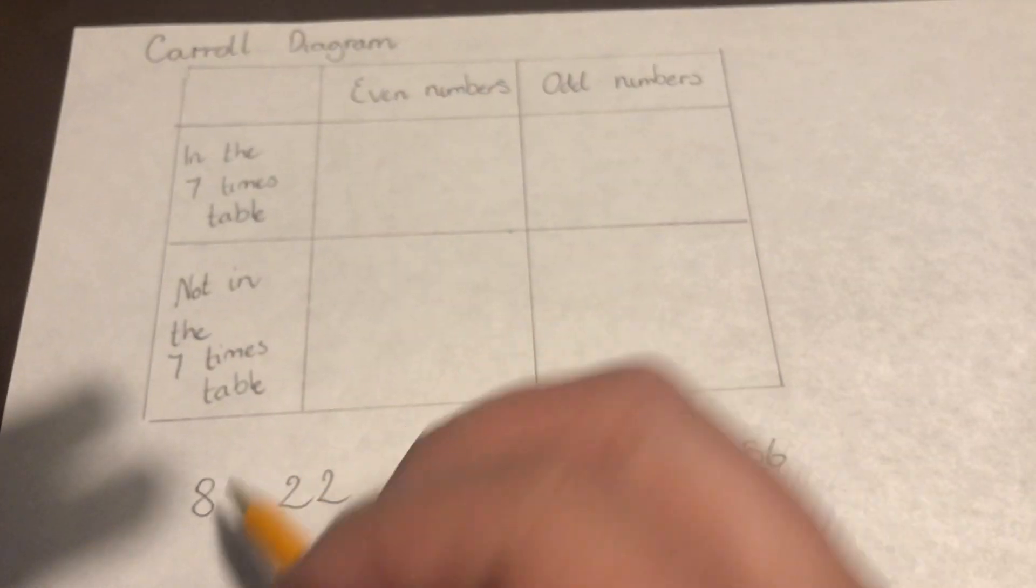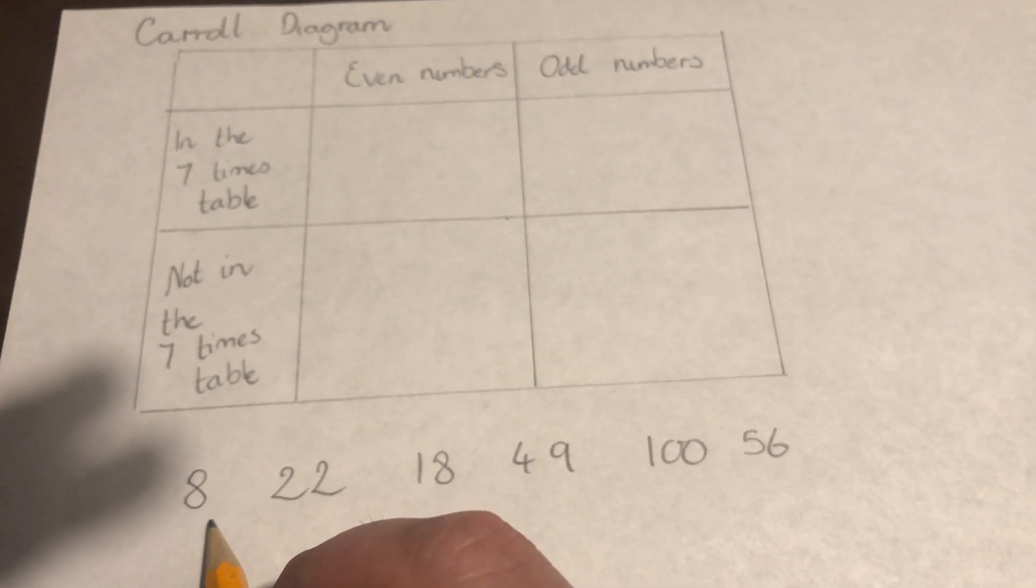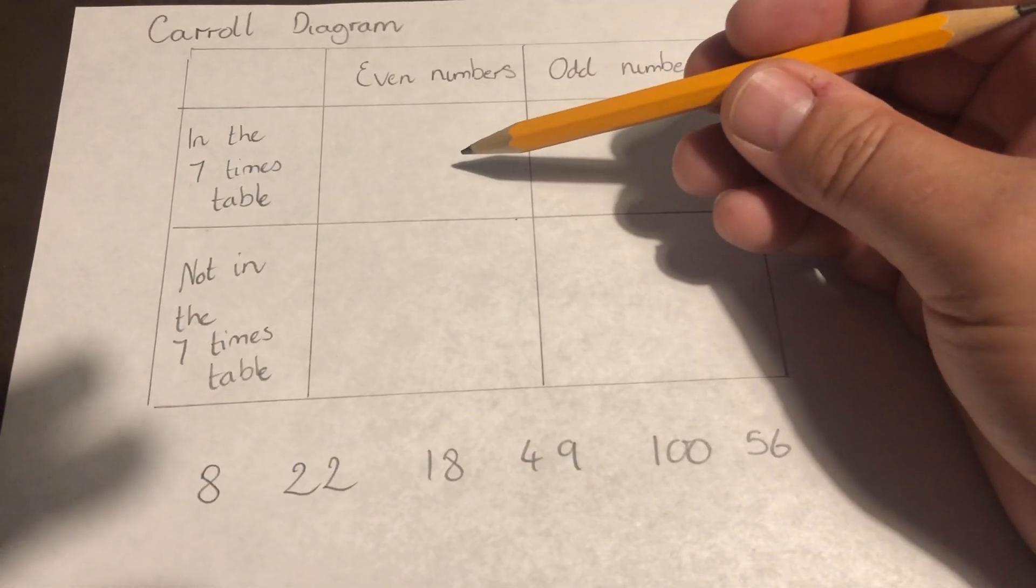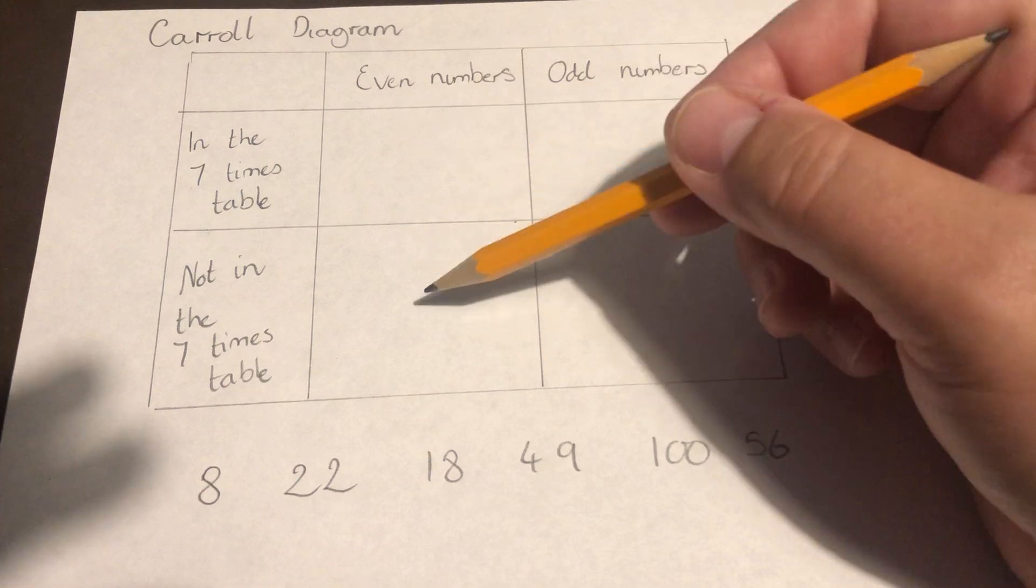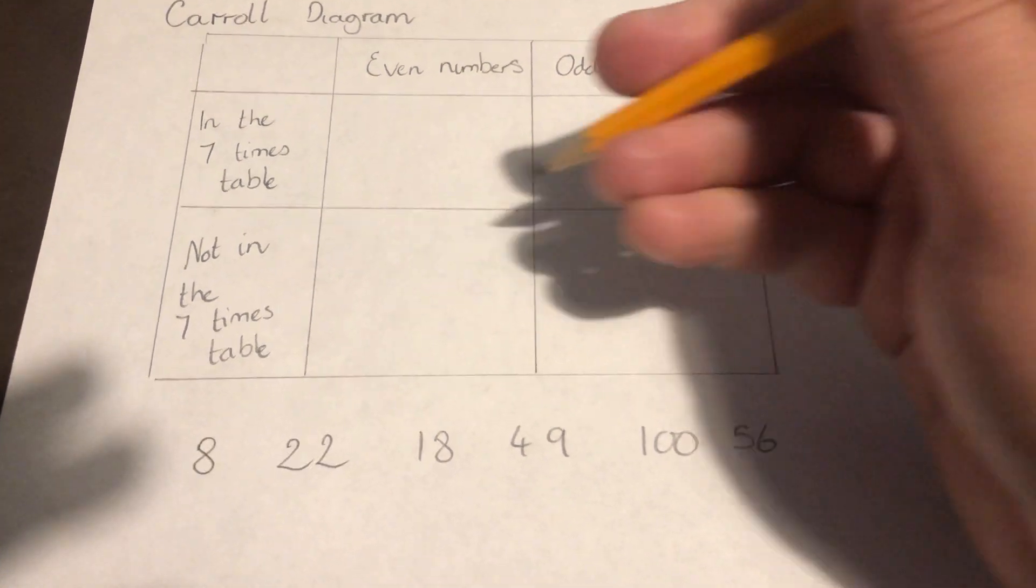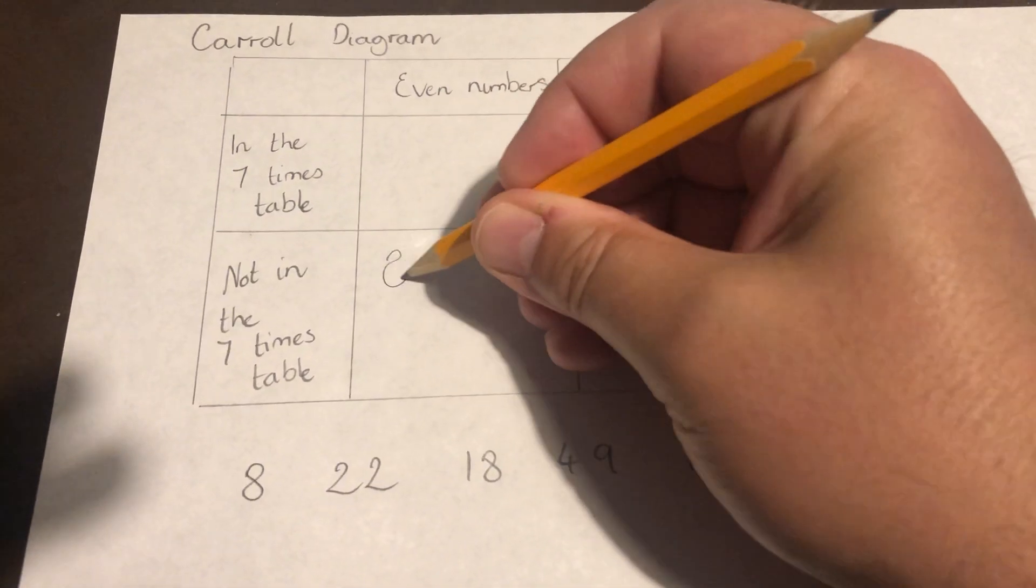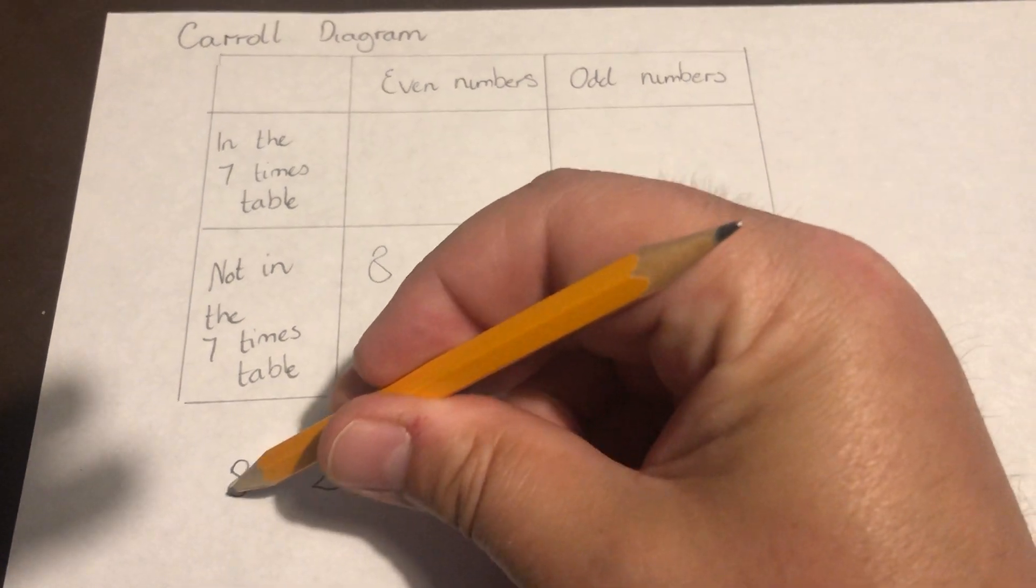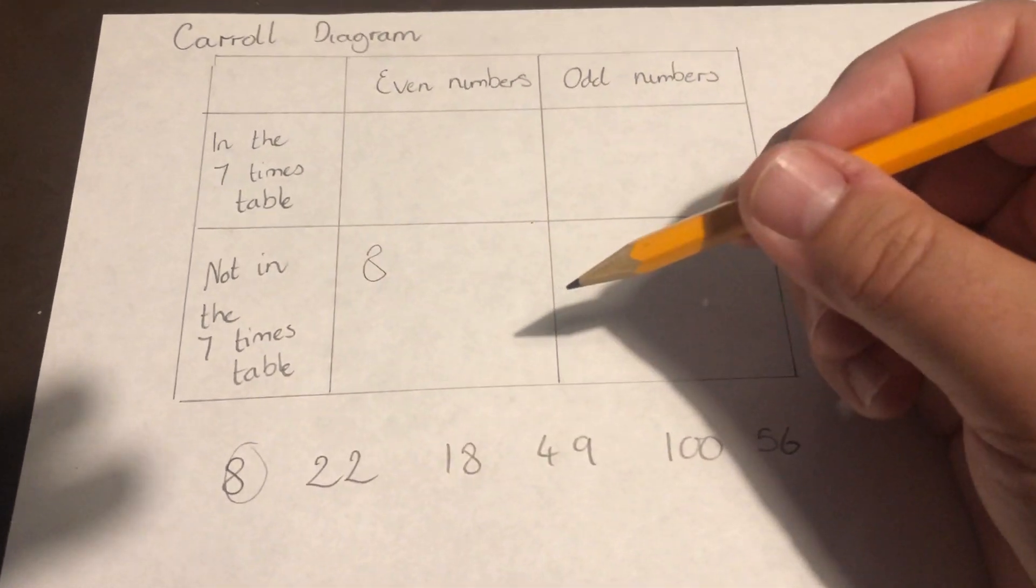If I start with the numbers, I've got number 8 here. I know it's an even number, so I know it will go in this column, but it is not in the seven times table. So the 8 is going to go here, and I'm going to cross it out or circle it just to show that I've used that one.